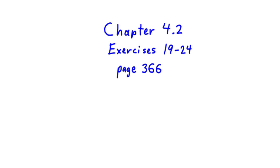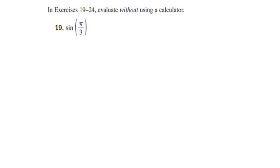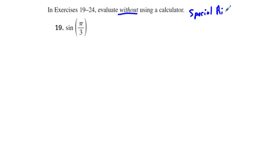This is chapter 4.2, exercises 19 through 24. Section 4.2 has to do with finding trigonometric ratios or functions, and in exercises 19 to 24 we evaluate without using a calculator. There is really a limitation to the ones you're expected to know, and those would be two types of right triangles called special right triangles.